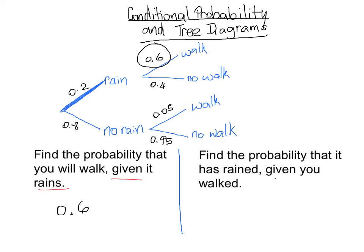If the question were backwards — given that you walked, what's the probability that it rained? Now what's given is that you walked, either here or here, and you have to look backwards and ask yourself what's the probability that it rained. That's a much more difficult and involved question.